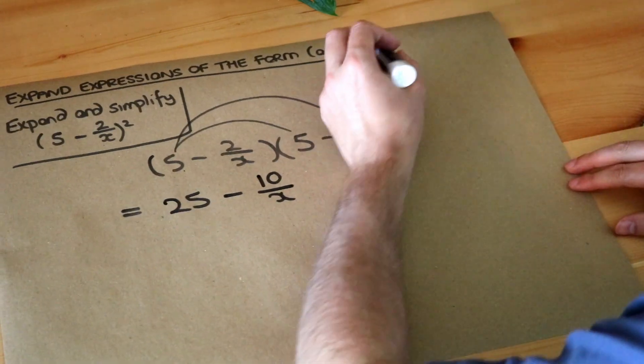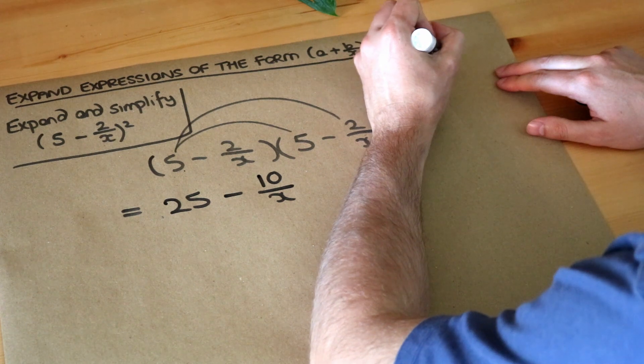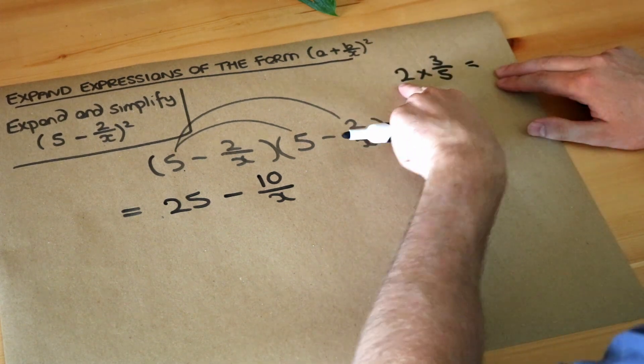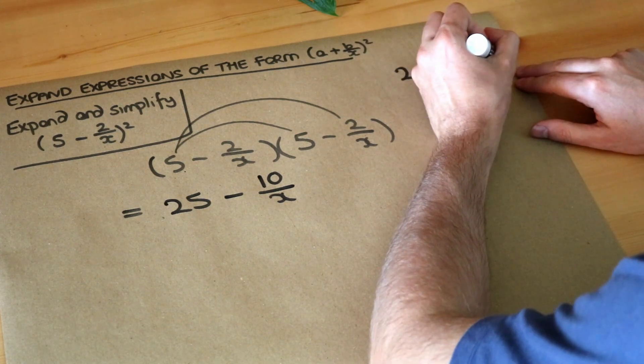Just to give you another example, if I had 2 multiplied by 3 fifths, the 2 only affects the 3, so 2 times 3 is 6 but the 5 remains as it is.